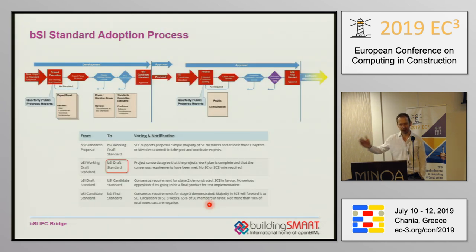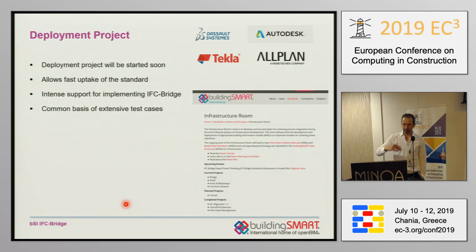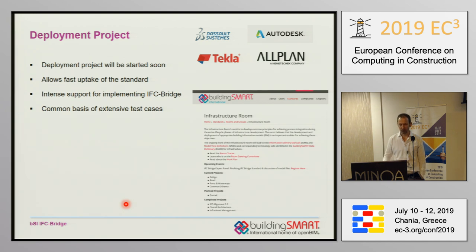We still have to undergo a number of formal steps until this becomes an official standard. Building Smart International has a very formalized standardization process. We are currently at the stage of a BSI draft standard. Very soon it should become a BSI candidate standard once certain committees approve it. Then we have another round of voting on the international level, and finally it will become a BSI final standard — likely in September this year. Of course, we also have to bring it to market, because a standard without implementers is useless. We have already started talking intensively with main software developers including Dassault, Autodesk, Tekla, and Ourplan, who have expressed interest in quickly adopting this new standard. We will set up a deployment project to support them.